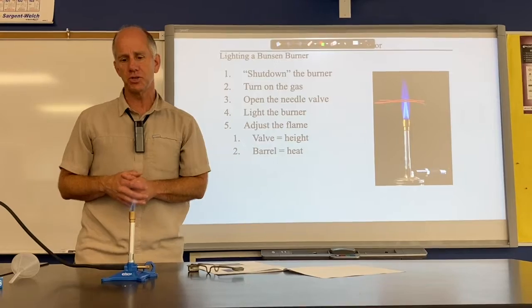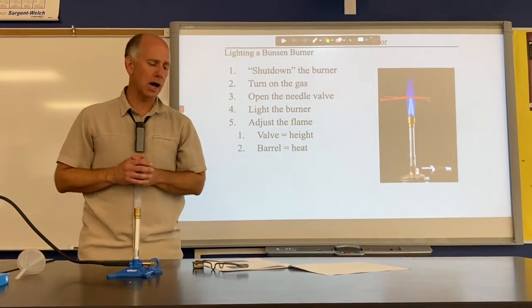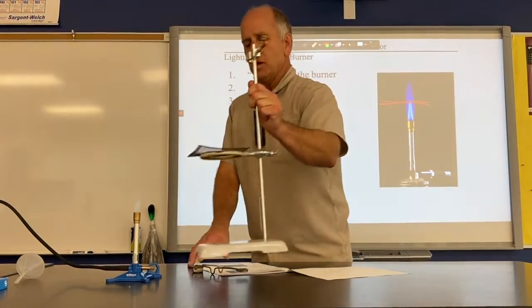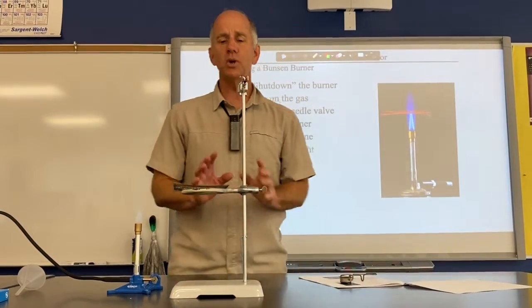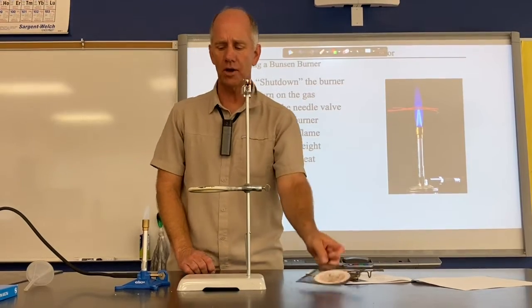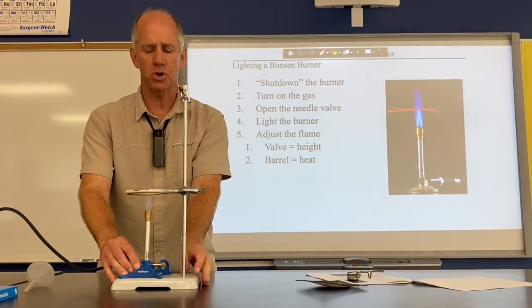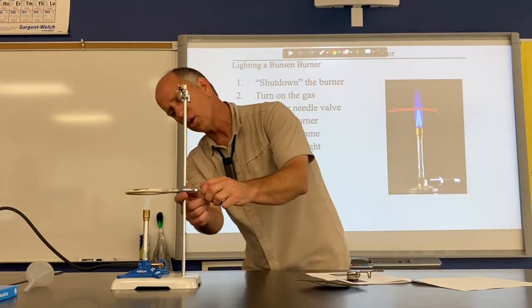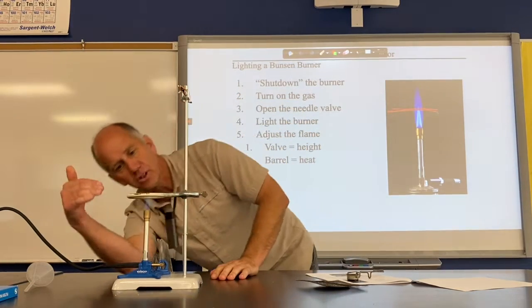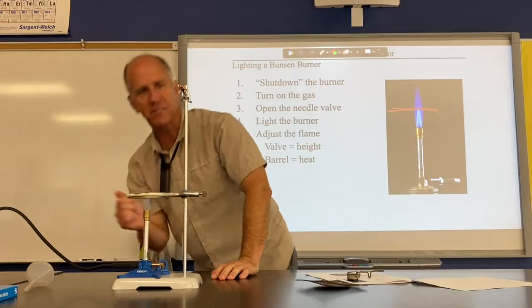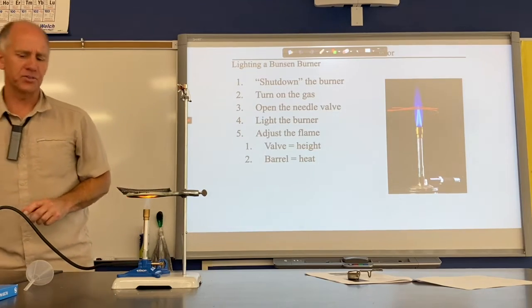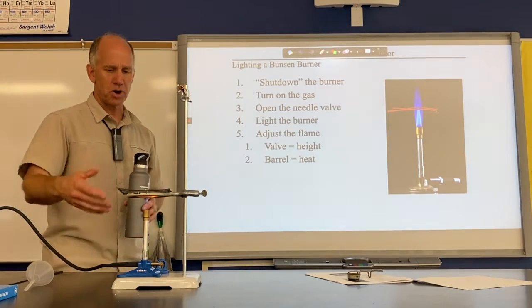You should hear a roar as you do this. Once you're done adjusting, it's time to introduce a ring stand. Adjust the ring stand prior to trying to use it — take off the wire gauze, place the Bunsen burner on the ring stand, then move the ring up and down until it's level with the hottest inner blue part of the flame. Then reintroduce the wire gauze and you're ready to use the burner for heating.